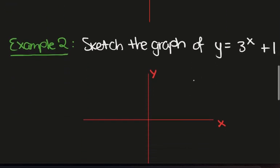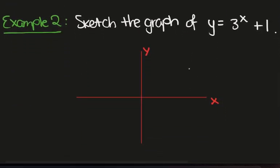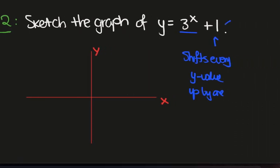Okay, let's look at something more complicated. So here we have y equals 3 to the x plus 1. And so we know what the graph of y equals 3 to the x looks like. And this plus 1 just shifts every y value up. So shifts every y value up by 1. And we call this a vertical translation.